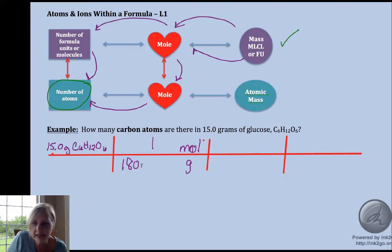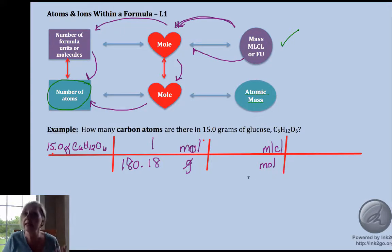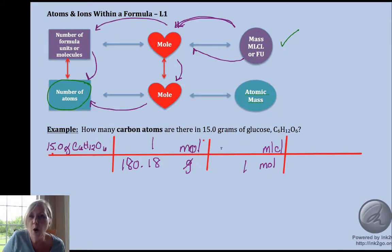Mass to moles, use molar mass. If you calculated the molar mass of glucose, you get 180.18 grams. Now I want to get rid of moles and go to molecules. This is something that hopefully you've done before. One mole of the molecule is what you can count.